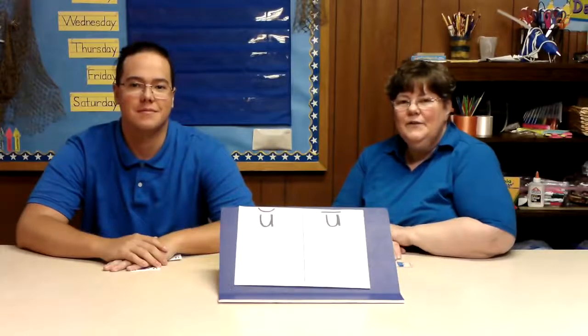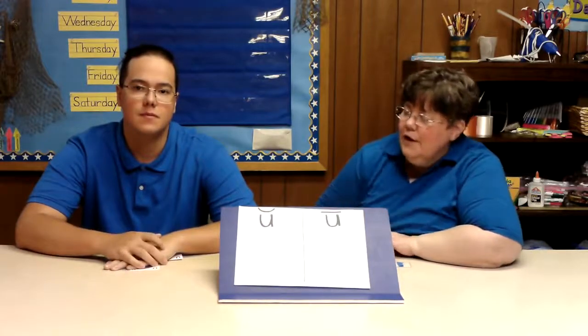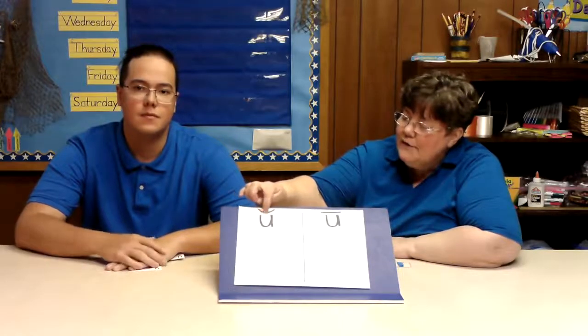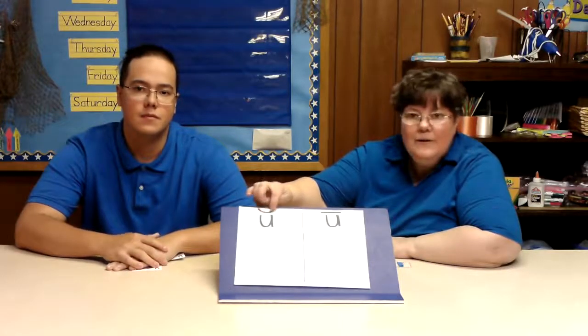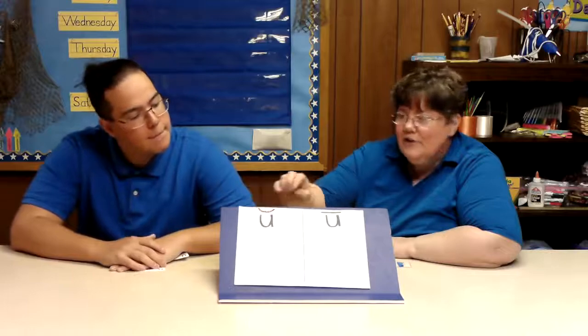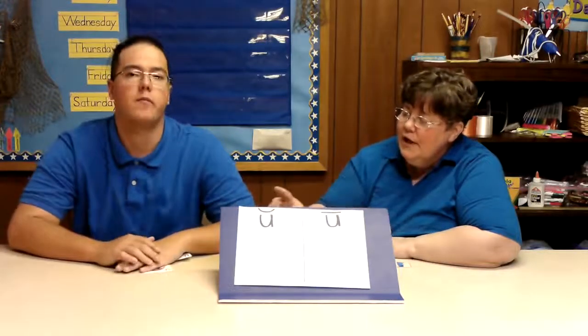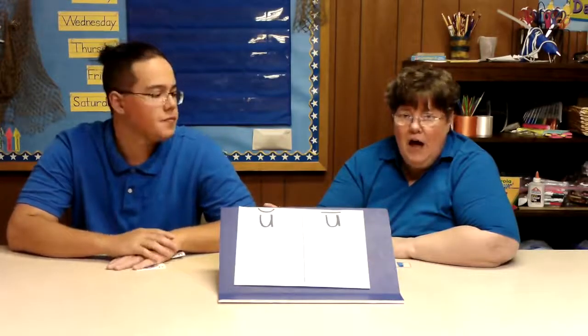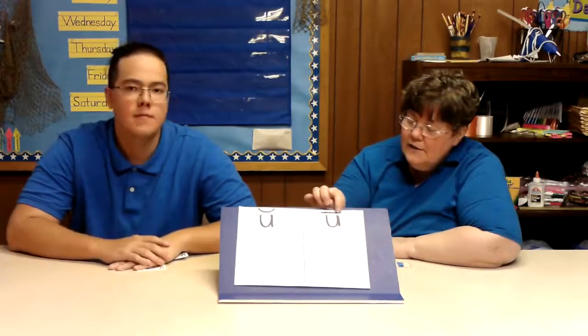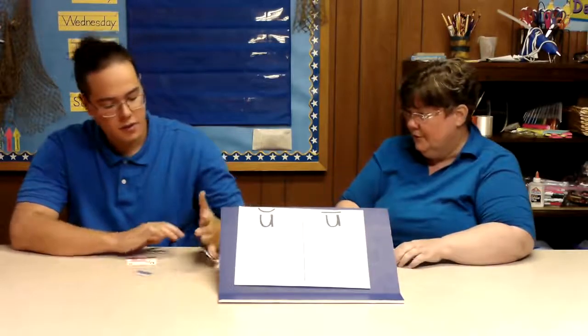Hi boys and girls. For this activity we are going to be sorting words into the long and short U sounds. The short U has that little dipped shape that's kind of shaped like a piece of macaroni, and that would say the 'uh' sound. This is the long U and that just says its name, U. So Mr. Michael, would you like to start?